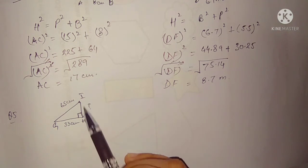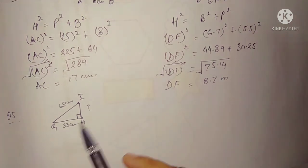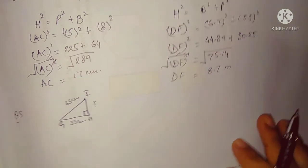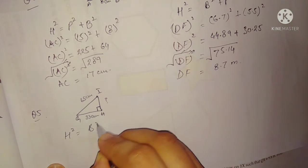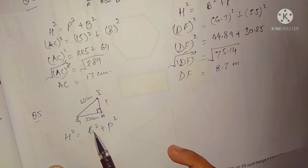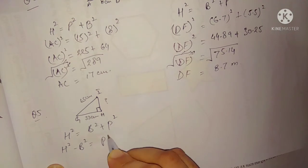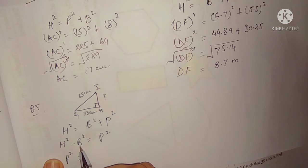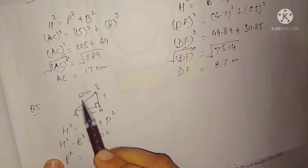In a right angle triangle, this is your perpendicular, this is your hypotenuse, and this is your base. We have to find the perpendicular. Write down the Pythagorean theorem: hypotenuse squared is equal to base squared plus perpendicular squared. Since we need perpendicular, rearrange to get: perpendicular squared equals hypotenuse squared minus base squared.